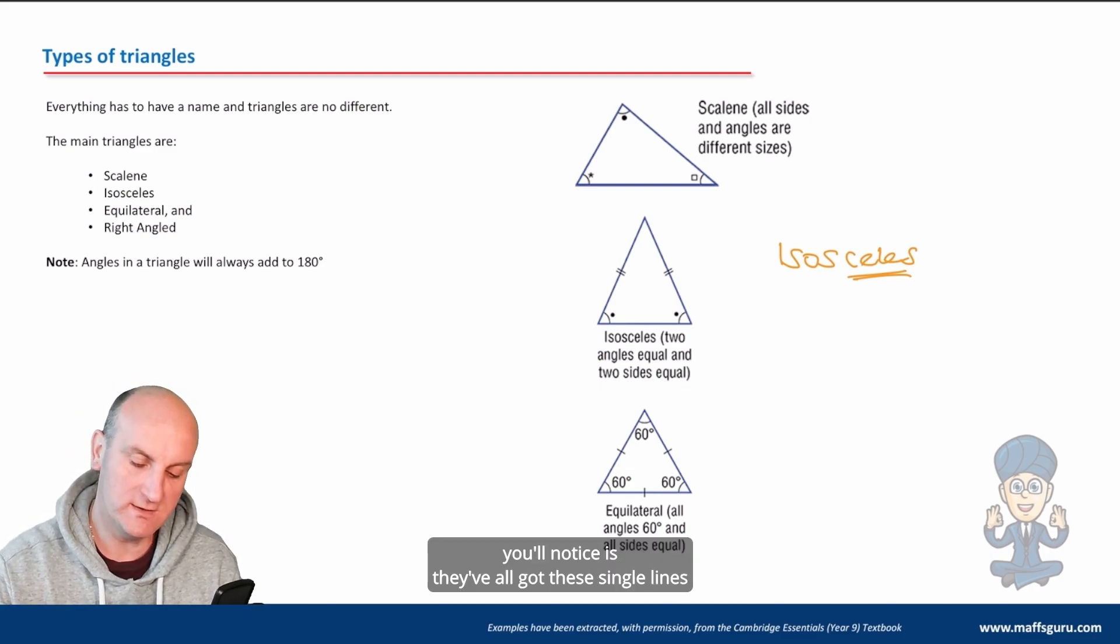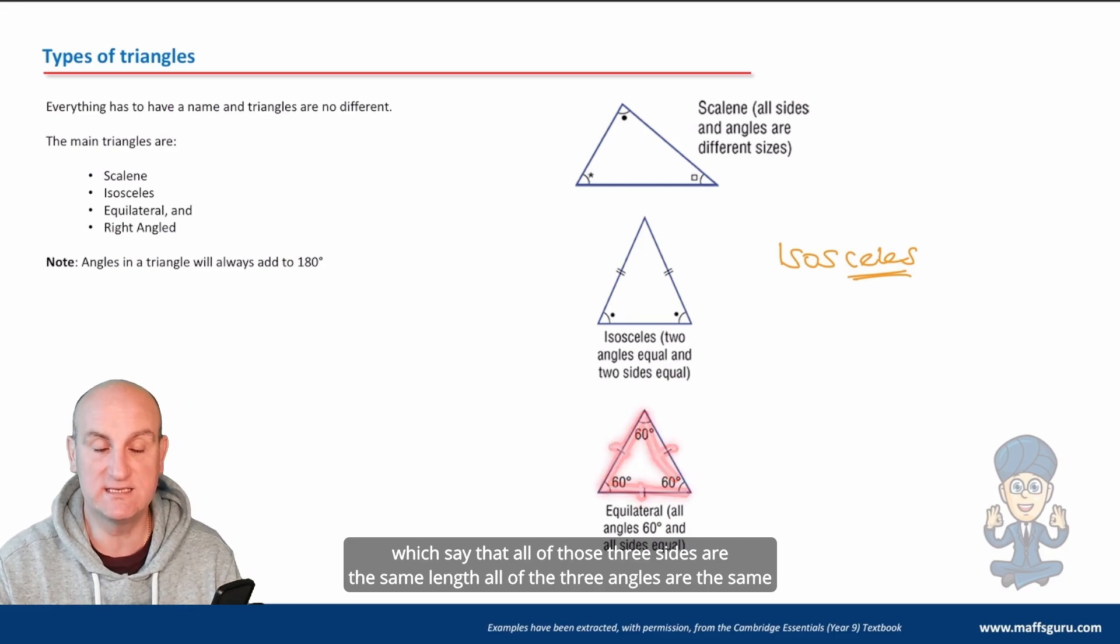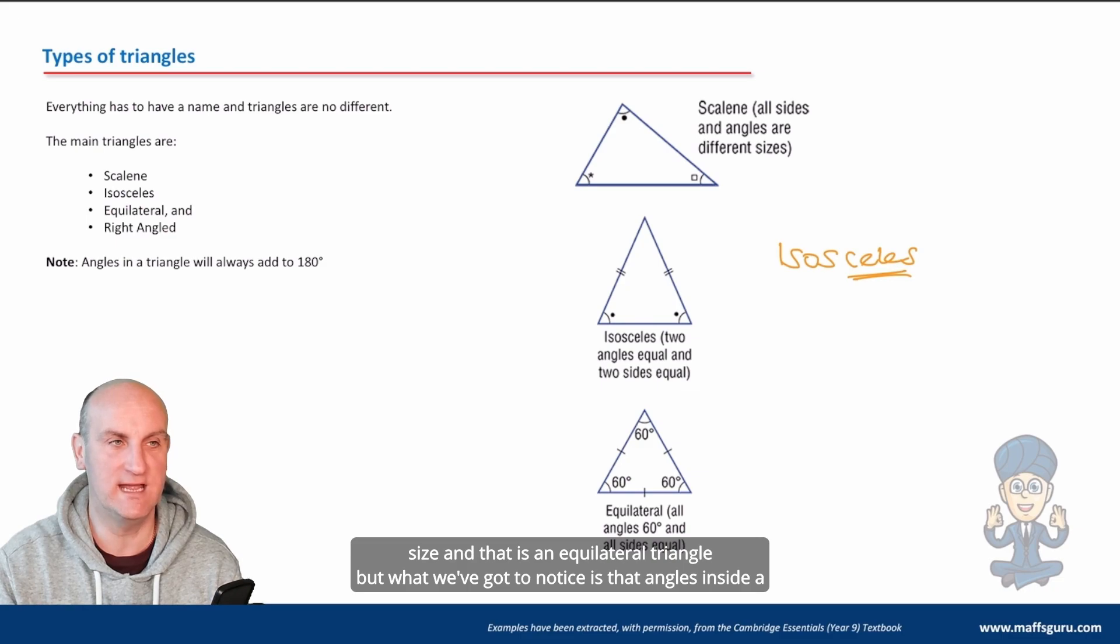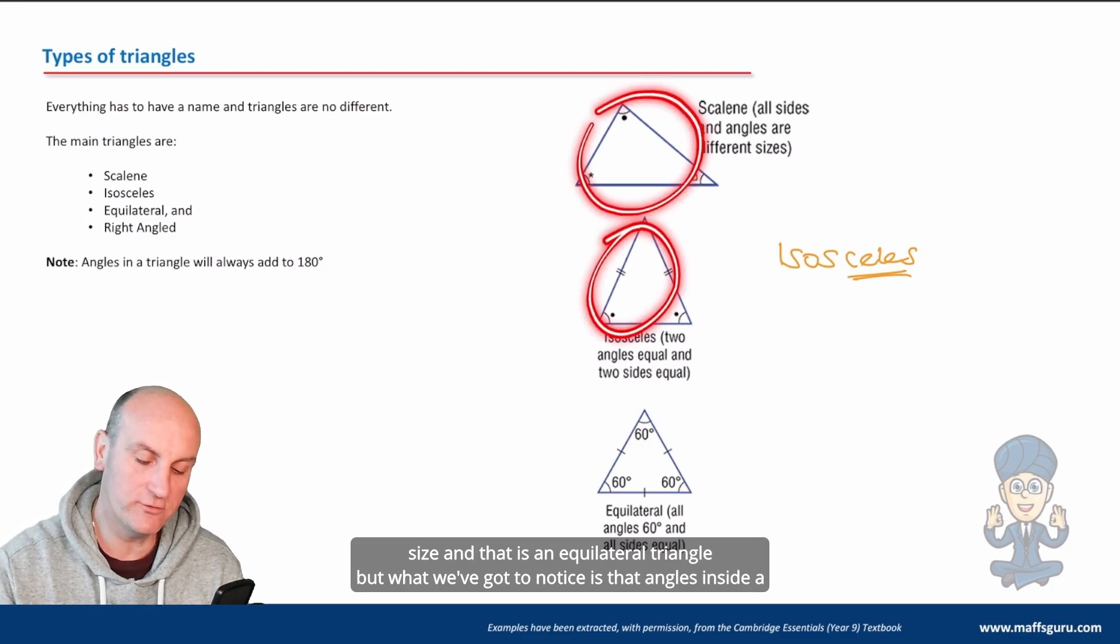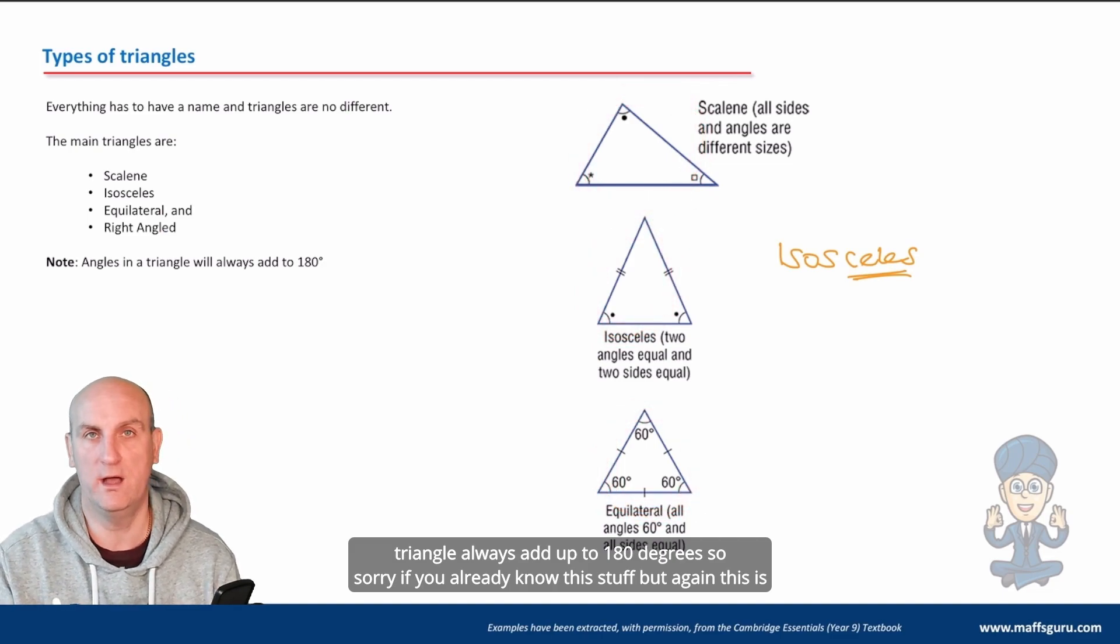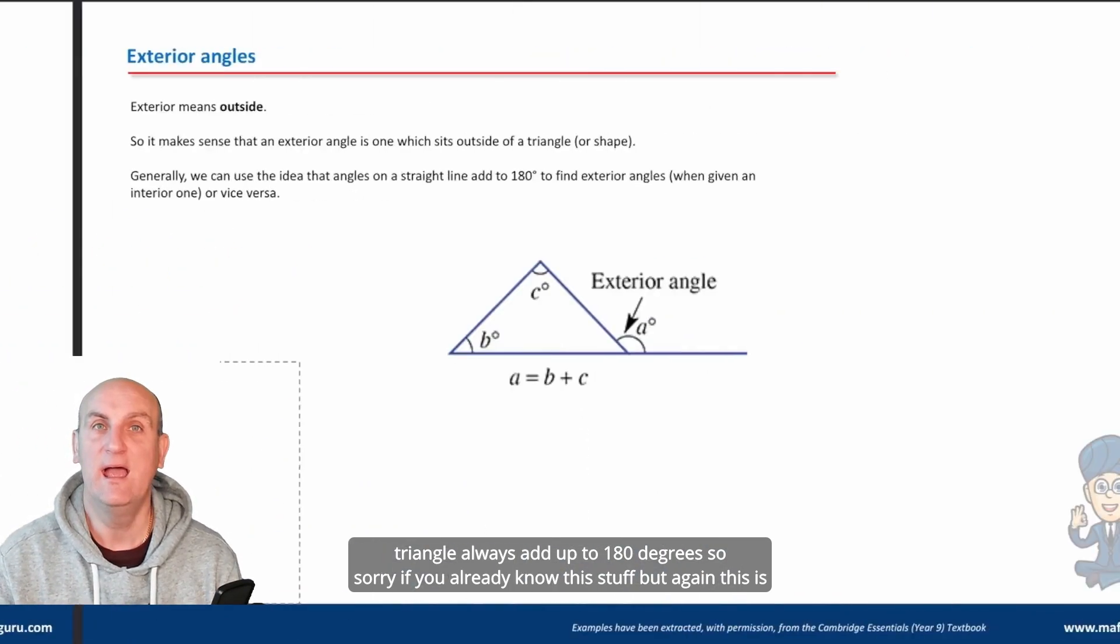The other one, you'll notice they've all got these single lines which say that all of those three sides are the same length, all of the three angles are the same size, and that is an equilateral triangle. What we've got to notice is that angles inside a triangle always add up to 180 degrees.